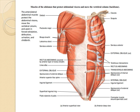Here you can see the entire pictorial representation. The anterior lateral abdominal muscles protect the abdominal viscera, move the vertebral column and assist in forced exhalation, defecation, urination and childbirth. Visible in the image are the rectus abdominis, the linea alba (the white line at the midline), the external oblique with its tendinous intersections, the aponeurosis of the internal oblique, the internal oblique muscle itself, the aponeurosis of the external oblique, the inguinal ligament and the superficial inguinal ring.